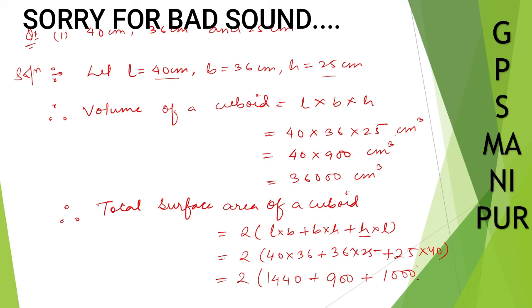You can just multiply and check all these numbers. Surface area is always in centimeter square, so 2 into 1440 plus 900 will be 2340, plus 1000 will be 3340 centimeter square.